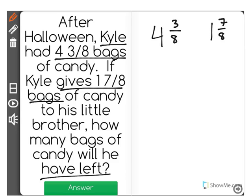So let's picture this. Kyle started with 4 and 3 eighths, and then he gives away 1 and 7 eighths. So we're starting with the original now, and we're subtracting 1 and 7 eighths. Now, what this means is we have a subtraction problem with mixed numbers.